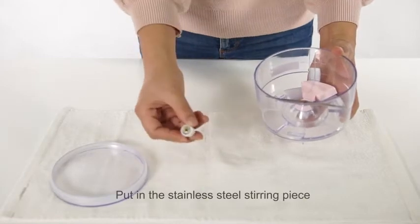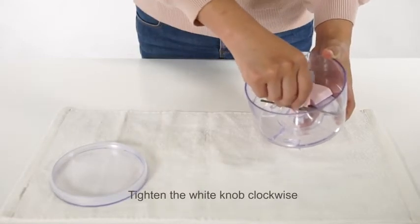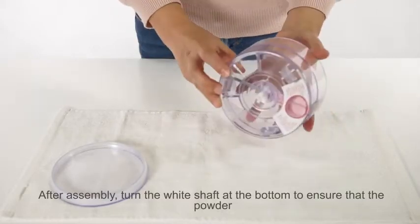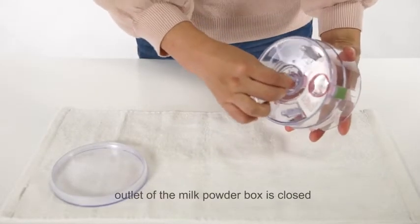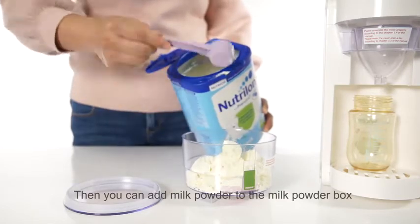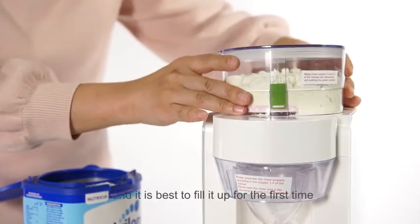Put in the stainless steel stirring piece. Tighten the white knob clockwise. After assembly, turn the white shaft at the bottom to ensure that the powder outlet of the milk powder box is closed. Then you can add milk powder to the milk powder box. It is best to fill it up for the first time.